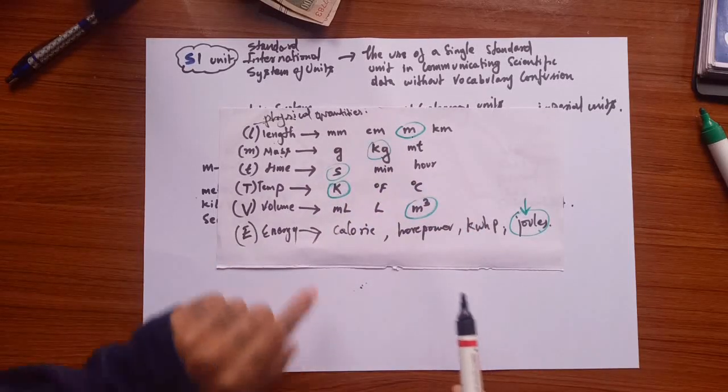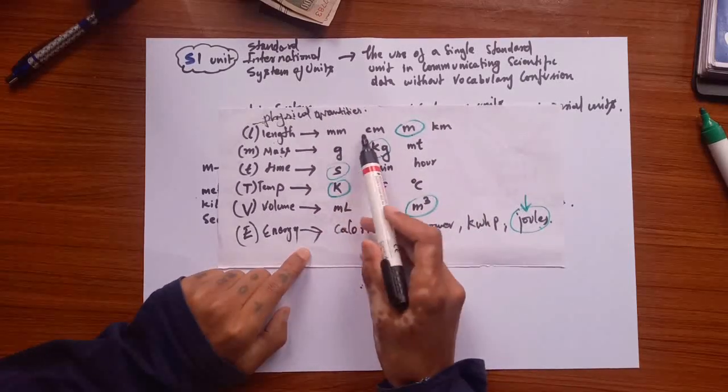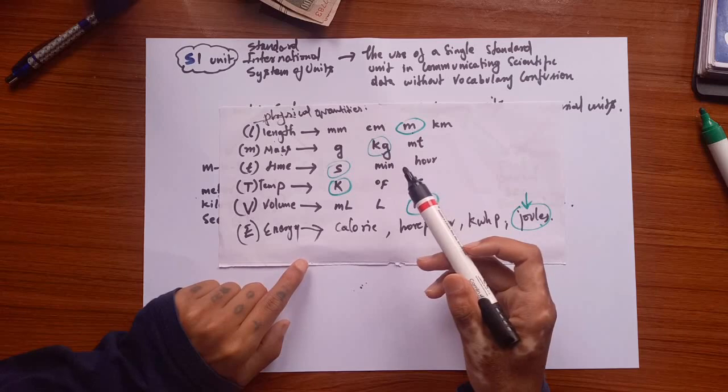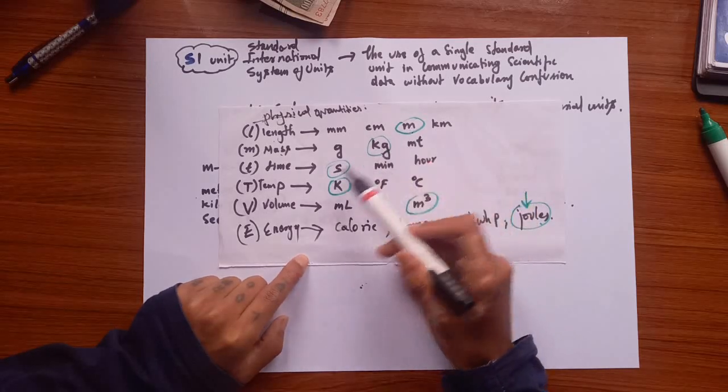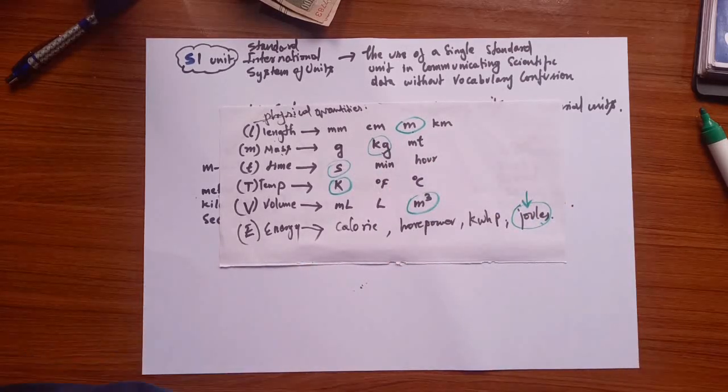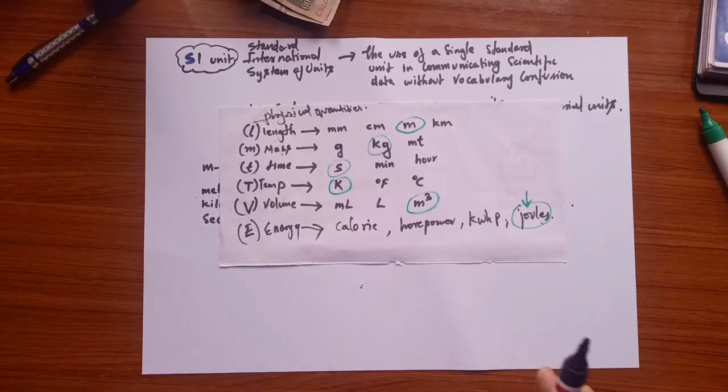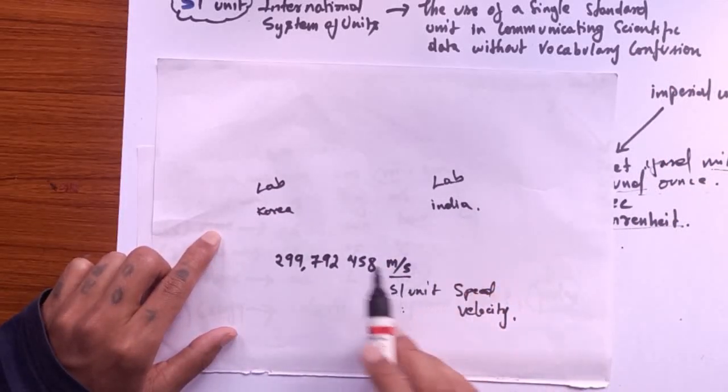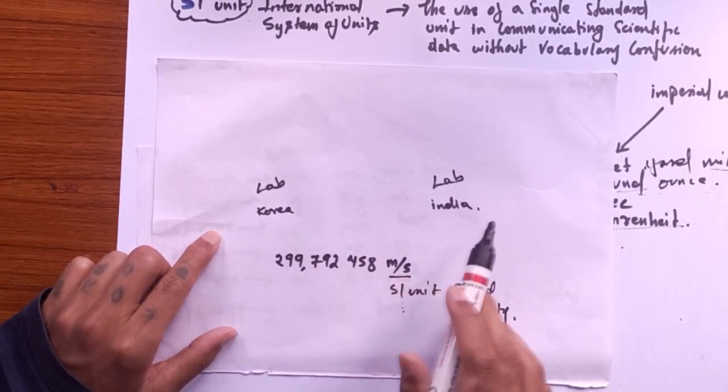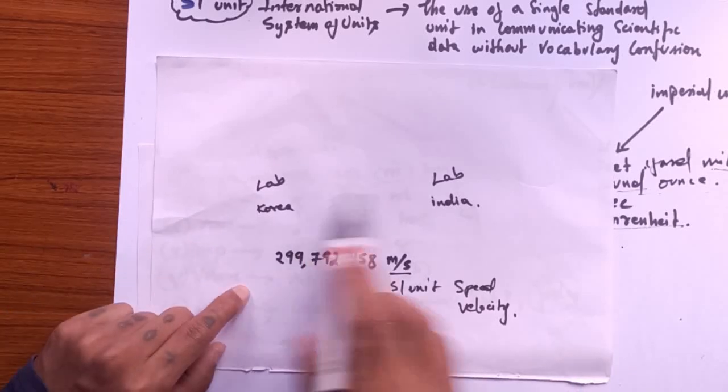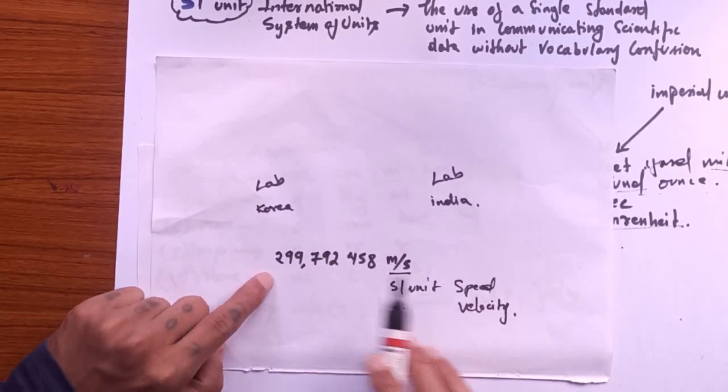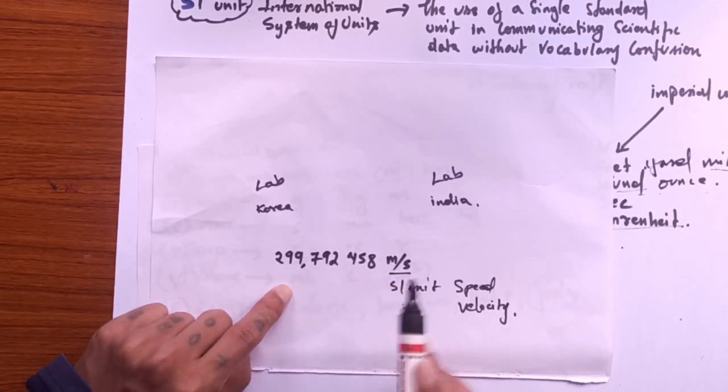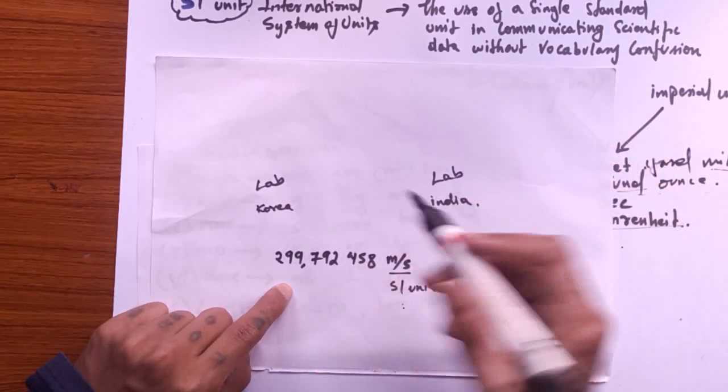Now that they have selected the standard units for the physical quantities, though we can still use other units on our daily basis, the scientific communities are mostly going to use the SI unit for exchanging information from one country to another or from one laboratory to another. Take for example, let's say we have a laboratory in Korea and a laboratory in India, and the scientists here are exchanging scientific data among the community. Let's say Korea is going to send the scientific data of the speed of light to the Indian scientists.